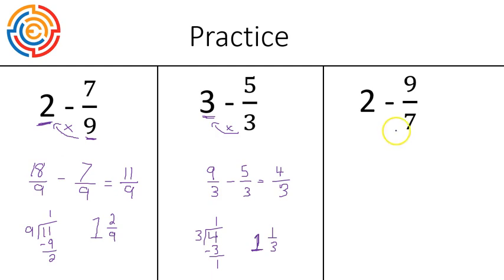In our final question, we're converting two into a fraction. We multiply seven times two to get 14 over seven, and we are subtracting nine out of seven, which leaves us with five sevenths. No need to simplify in this one. So there are three practice problems with whole numbers subtracting fractions. I hope that video was helpful for you. Have a wonderful day.